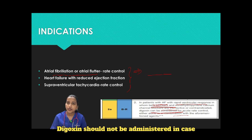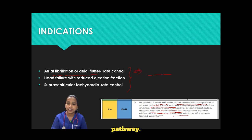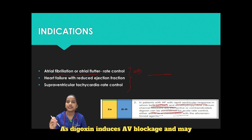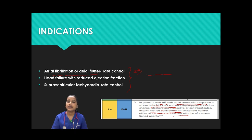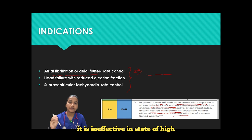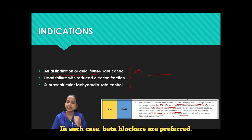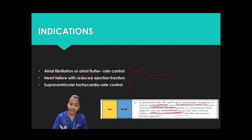Digoxin should not be administered in case of pre-excitation caused by accessory pathway, as digoxin induces AV blockade and may trigger ventricular tachyarrhythmia. It is also ineffective in states of high sympathetic activity; in such cases beta blockers are preferred.